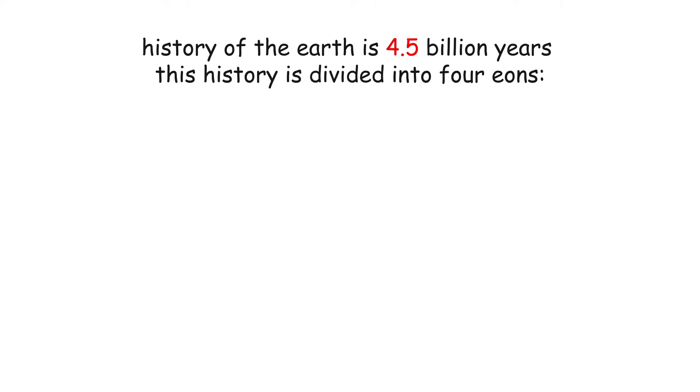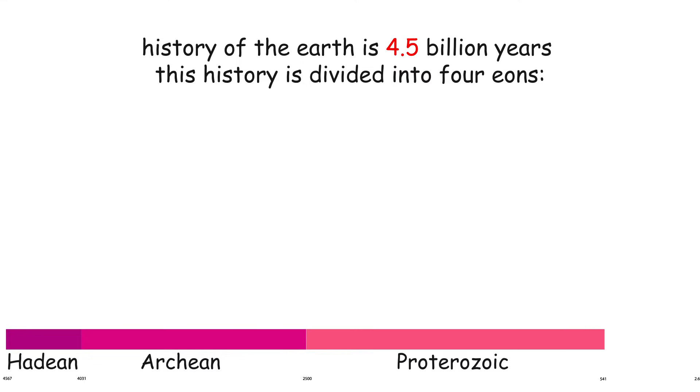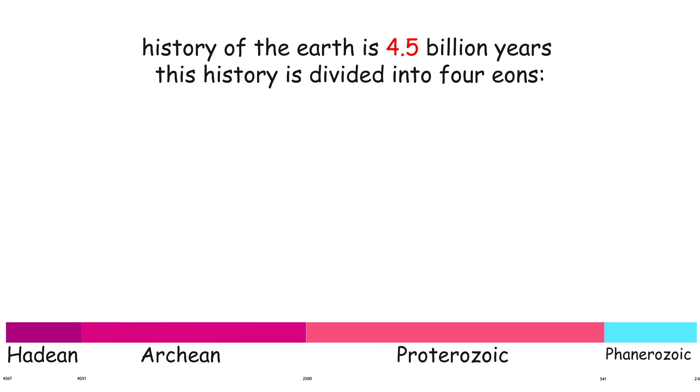The history of the Earth is 4.5 billion years. This history is divided into four eons: Hadean, Archean, Proterozoic, and Phanerozoic.